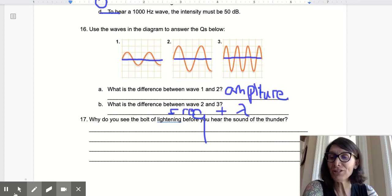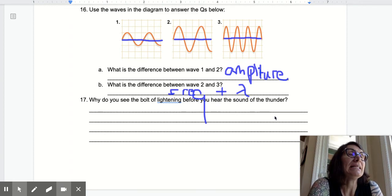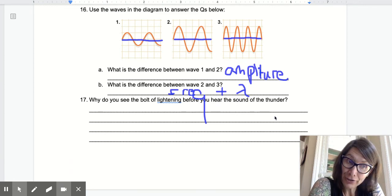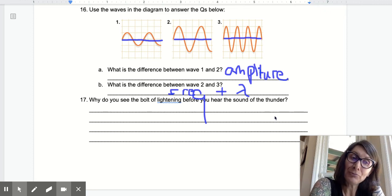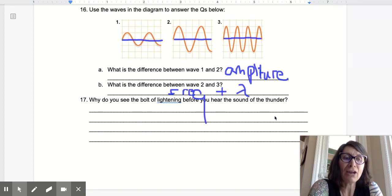Last question, number 17. Why do you see a bolt of lightning before you hear the sound of thunder? Because in air, which is not very dense, sound does travel. But because it's not very dense, sound travels slower. Light travels faster in air than sound. So when that lightning strikes, it happens at the same time, the sound and the light. I see the lightning first because light travels faster than sound. Awesome.